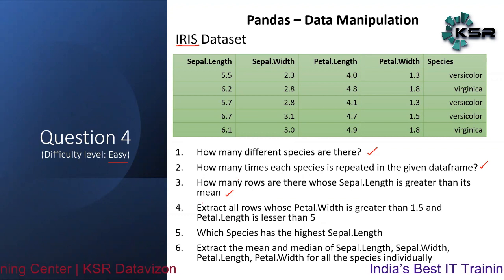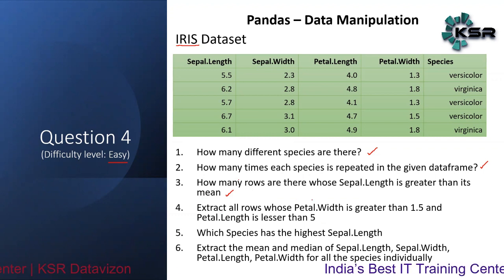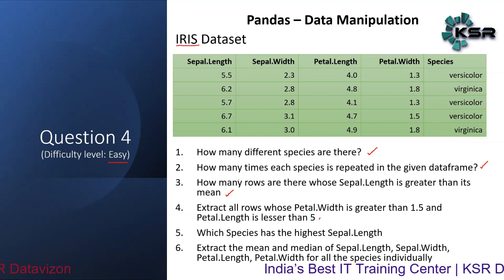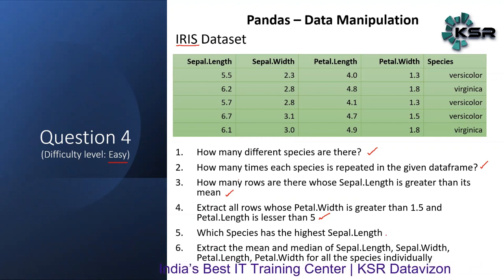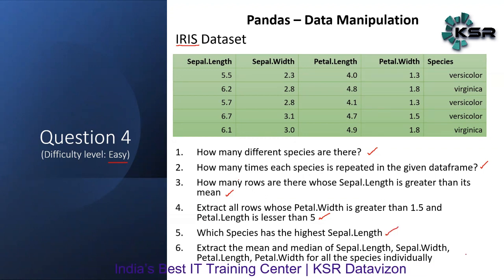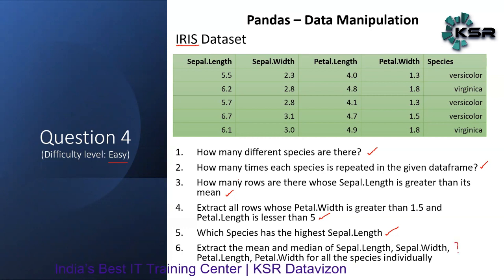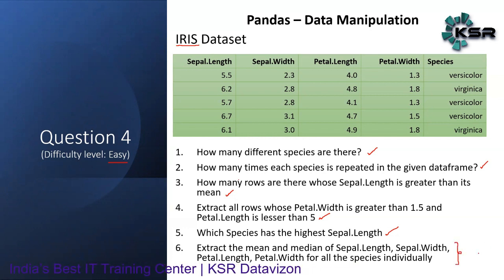The fourth question is: extract all rows whose petal width is greater than 1.5 and petal length is greater than 5. The fifth question is: which species has the highest sepal length — extract only the species name. Lastly, extract the mean and median of all four columns for each species individually.